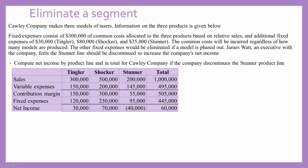The problem also tells us that fixed expenses consist of $300,000 of common costs allocated to the three products based on relative sales. Additional fixed expenses of $30,000 go to Tingler, $80,000 for Shocker, and $35,000 for Stunner. The common costs will be incurred regardless of how many models are produced, while the other fixed expenses would be eliminated if a model is phased out.